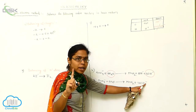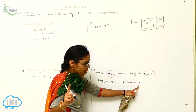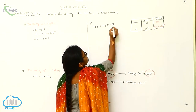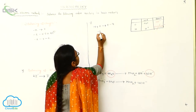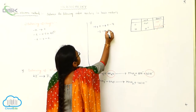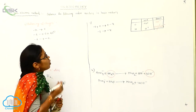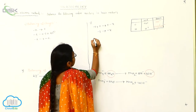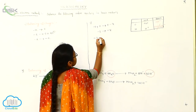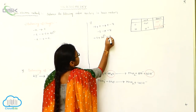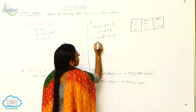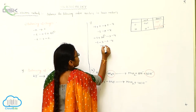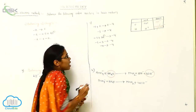OH⁻ possesses minus one charge. How many OH⁻ ions are there? Four. So four into minus one gives minus four. That means minus one on the left gives minus four on the right. So on the left side I can add three electrons: minus one minus three gives minus four. So minus four is balanced.